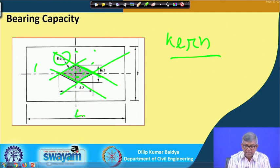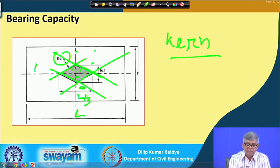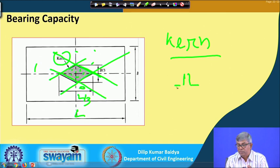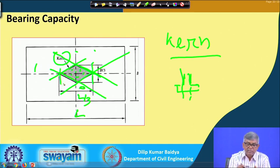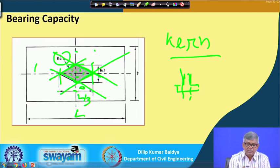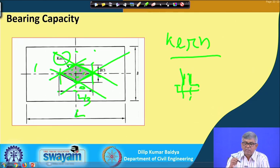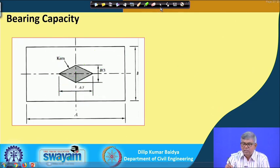If we join the points L/6 and B/6 from the centroid on all four sides, we get the kern — a rhombus-shaped area. If the load is applied anywhere within this zone, the contact pressure below the footing will always be positive (compressive). If the load goes outside this zone, tension may develop. To maintain positive pressure throughout the footing base, the load must always be applied within the kern. With this, I will stop here. Thank you.